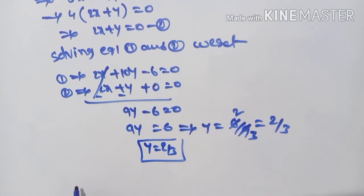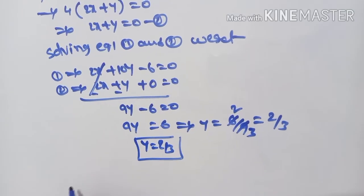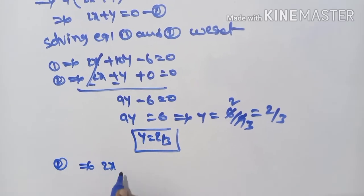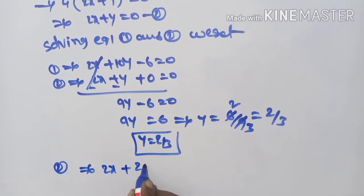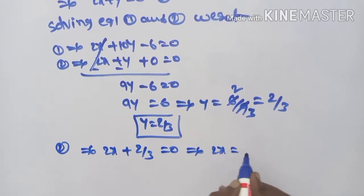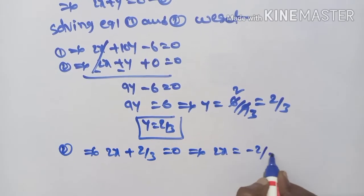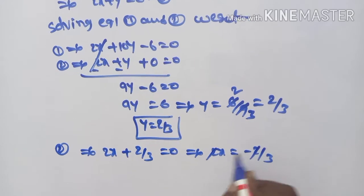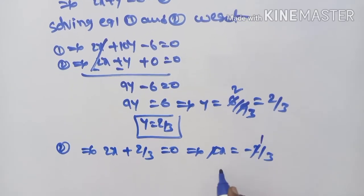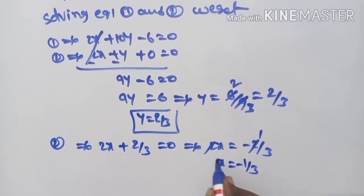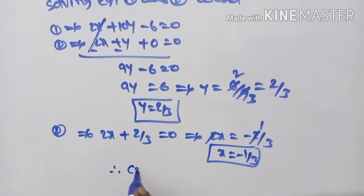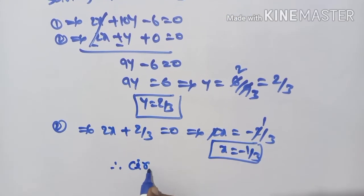Substituting y = 2/3 into equation 2: 2x + 2/3 = 0, which implies 2x = -2/3, so x = -1/3. Therefore, the circumcenter is (-1/3, 2/3).